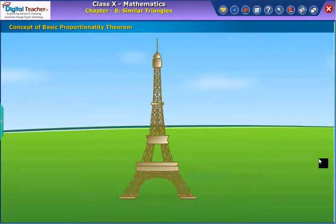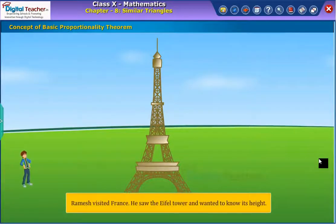Concept of basic proportionality theorem. Ramesh visited France. He saw the Eiffel Tower and wanted to know its height. He applied the basic proportionality theorem to calculate the height of the tower. Let us now learn how basic proportionality theorem is used in obtaining such results.